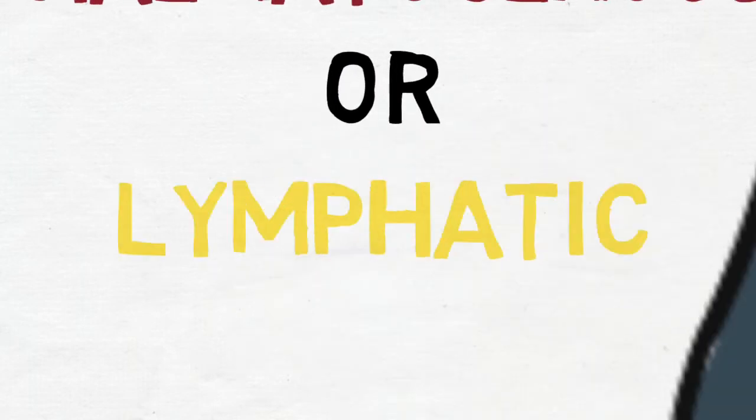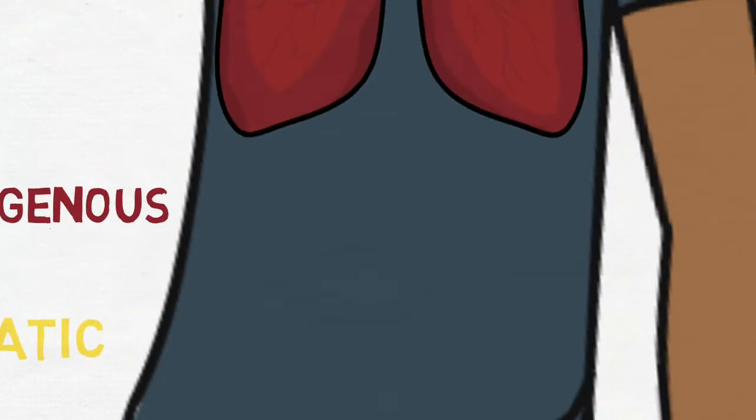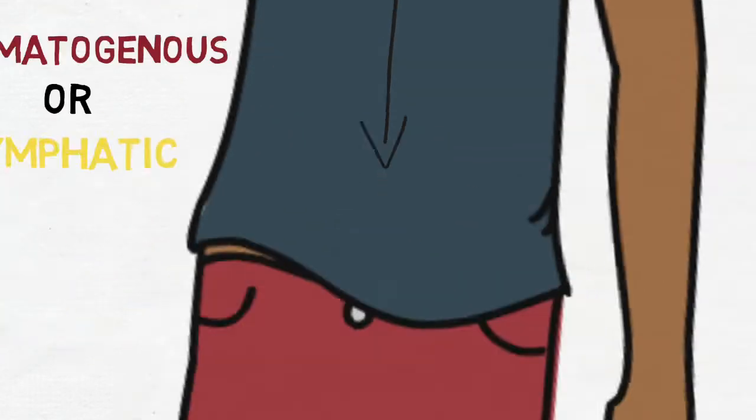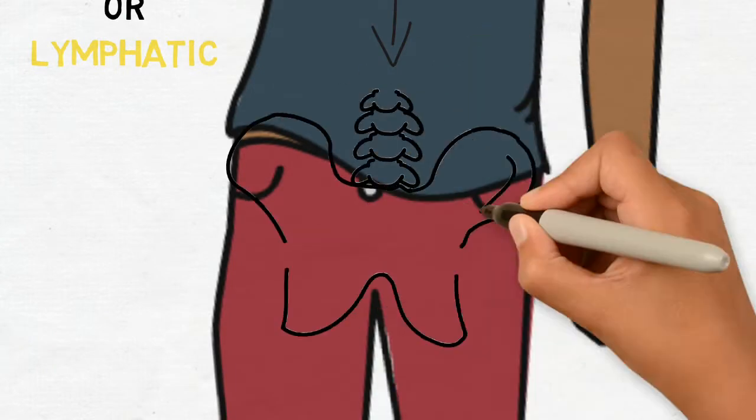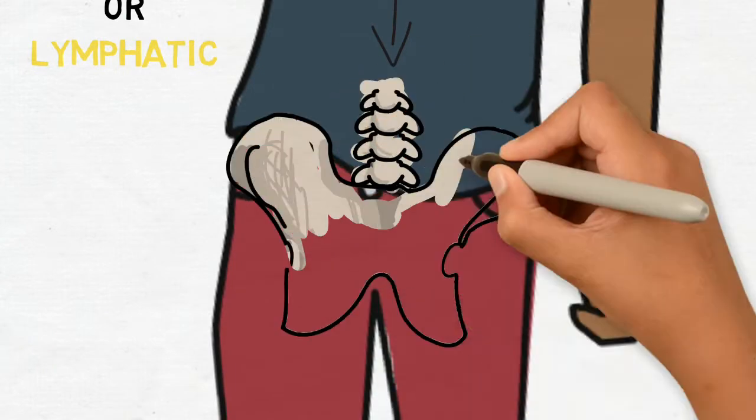The lower thoracic and upper lumbar vertebrae, T8 to L3, are most commonly affected.